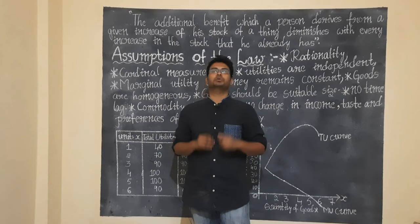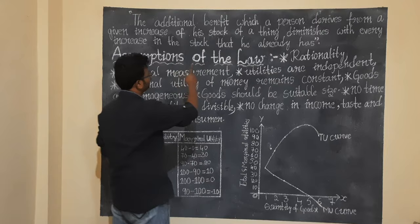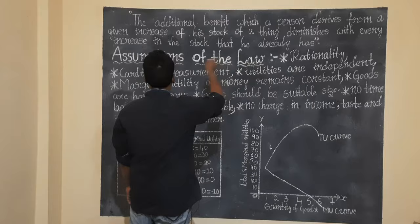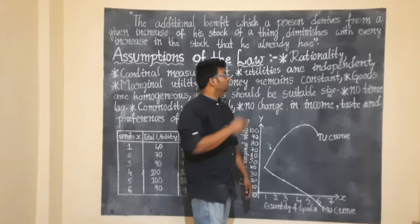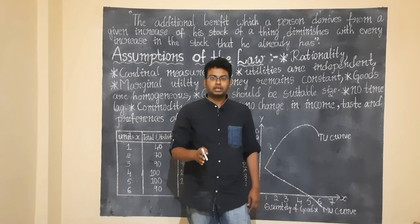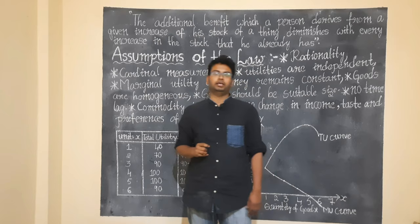Once the consumer reaches maximum satisfaction, after that point satisfaction starts to decrease. This is what DMU explains. The statement is clear: the additional benefit which a person derives — so when you add a product, the additional benefit diminishes. With every increase in stock, as stock increases, the satisfaction or taste decreases. That is the Law of Diminishing Marginal Utility.